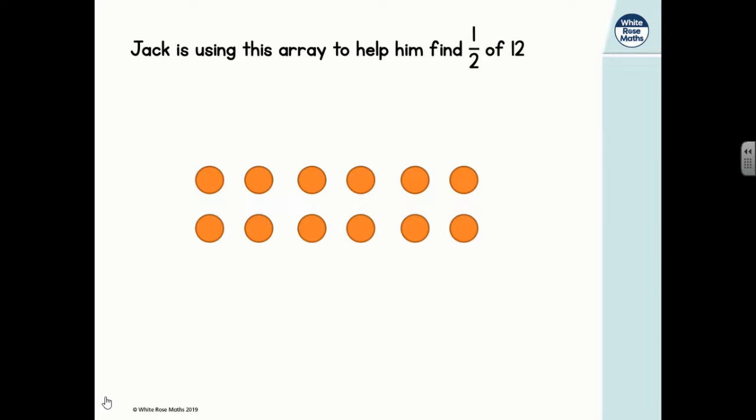He then rubs that line out and draws another line vertically down the middle of his array. Now again, we can clearly see that the left hand side has six counters and the right hand side has six counters, two equal groups, both showing a half of 12. So we can clearly see that six is a half of 12.